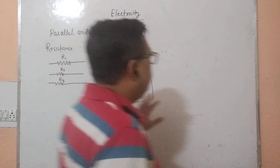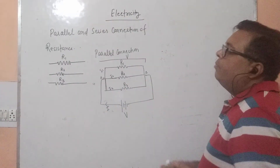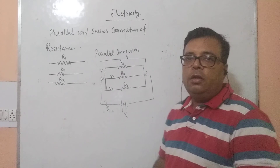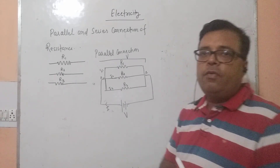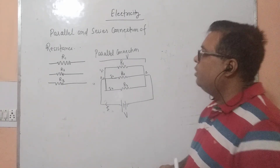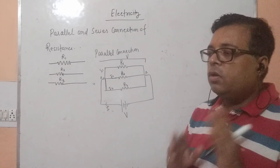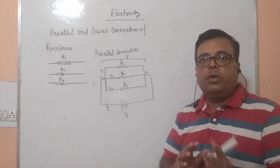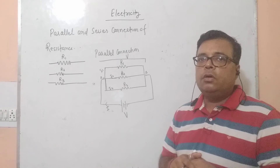First of all, you see if you have three resistances R1, R2, and R3. One thing I also want to recall — I have already discussed what is resistance. Resistance is a factor which prevents the flow of charges through any conductor.